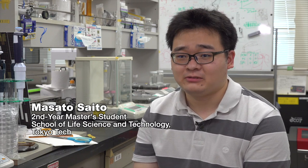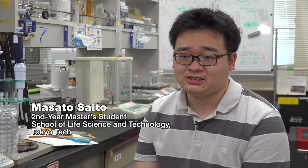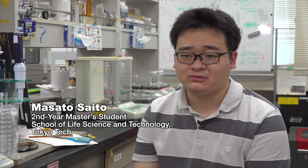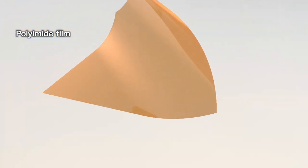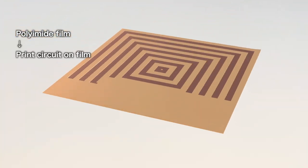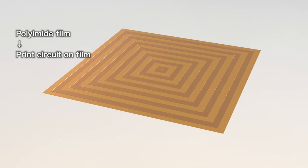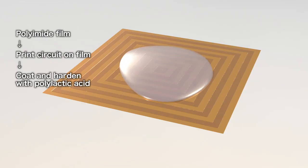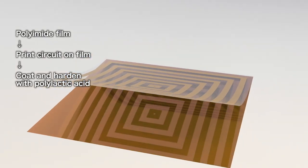So we developed a new method, which is to print the circuit on a film of another material called polyimide. By applying a solution of polylactic acid, drying it, and then peeling it off like a sticker...